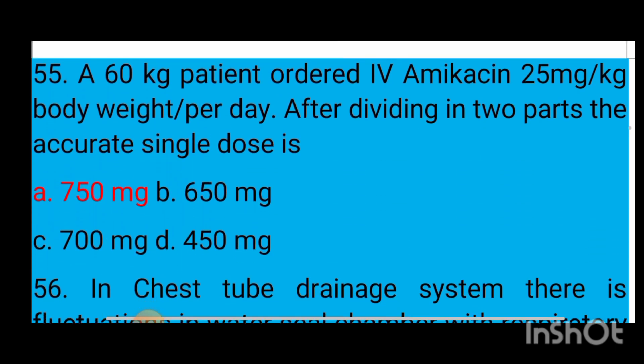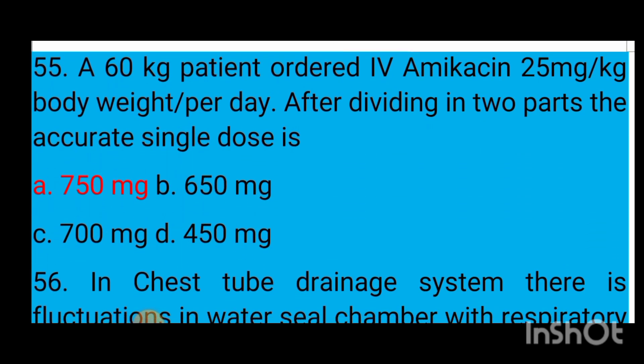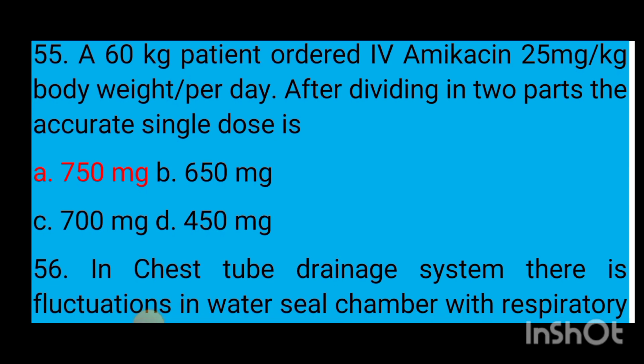Question number 55: A 60 kg patient is ordered IV amikacin at 25 mg per kg body weight per day. After dividing into two parts, the accurate single dose is — option A 750 mg, option B 650 mg, option C 700 mg, option D 450 mg. The correct answer is option A — 750 mg.